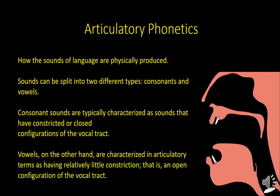The first branch is articulatory phonetics. Articulatory phonetics is concerned with how the sounds of language are physically produced by the vocal apparatus. The units articulatory phonetics deals with are known as gestures, which are abstract characterizations of articulatory events. The sounds we utter can be split into two types: consonants and vowels. Consonant sounds have a constricted or close configuration of the vocal tract, while vowels are characterized by relatively little constriction — an open configuration of the vocal tract.